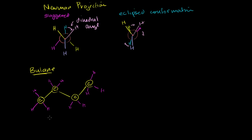Now if we try to draw a Newman projection here, we need to decide what to consider the front or back carbon. And you can actually pick. What's interesting with butane is if you pick carbon two as the front and carbon three as the back, and view the CH3 on each end as one of the add-ons onto those carbons, you can then do a Newman projection.